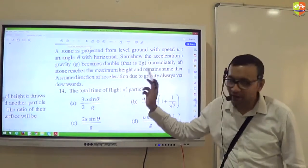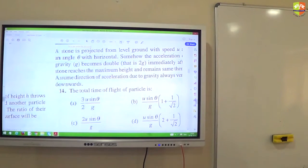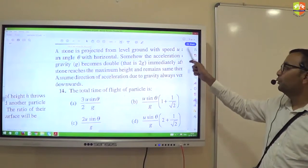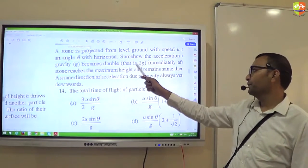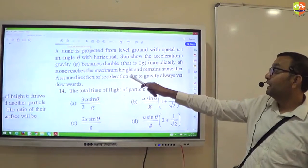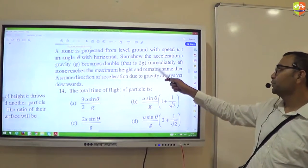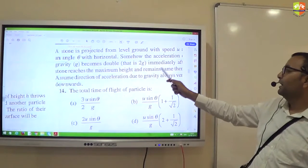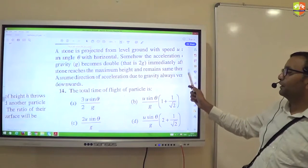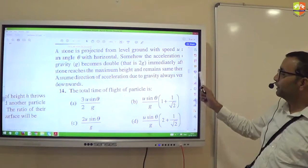Okay. 14th question. This is a paragraph type question. Reading comprehension type. Please spend 2 minutes. Don't talk. Solve it. A stone is projected from a level ground with speed U at angle theta with the horizontal. Somehow the acceleration due to gravity becomes double and is 2G immediately after the stone reaches a maximum height and remains same thereafter. Assume the acceleration due to gravity always vertically downwards.